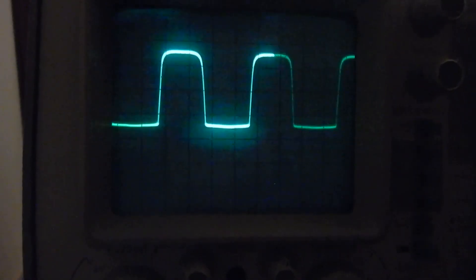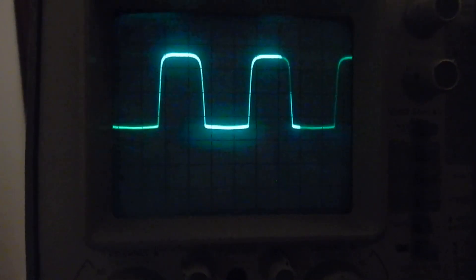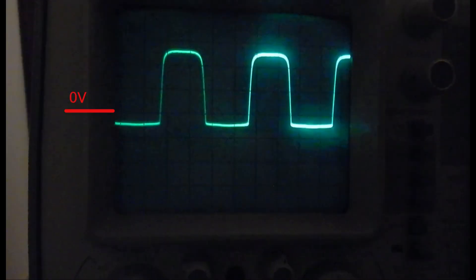And last, we want to verify the 5V square wave output, which appears to be working fine too. As predicted, the lower part of the square wave is slightly negative.